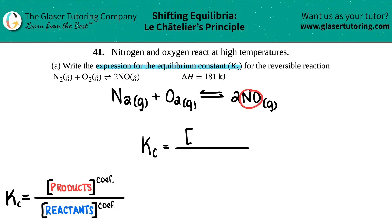The product is NO. So I'm going to say NO. Close that bracket. And now since I have a coefficient of 2, I have to raise this to the second. That's the only product.